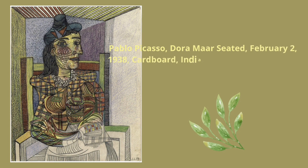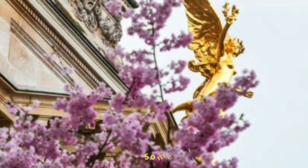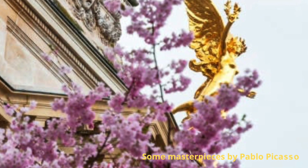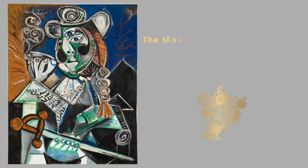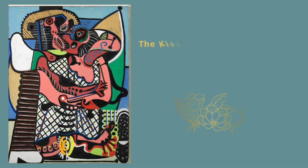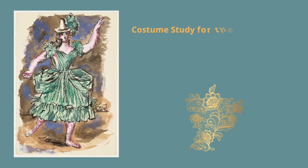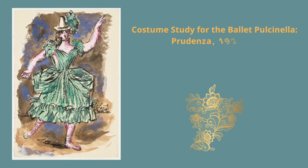Picasso's The Man with the Guitar — a canvas bearing the marks of three consecutive years, 1911, 1912, and 1913 — reveals the painter's laborious and experimental approach, encapsulated in his statement: 'I do not seek, I find.' Each phase of the painting signifies a new experiment, a continuous quest for creation. The central part of the painting, with its fragmentation into geometric planes, illustrates analytical Cubism.